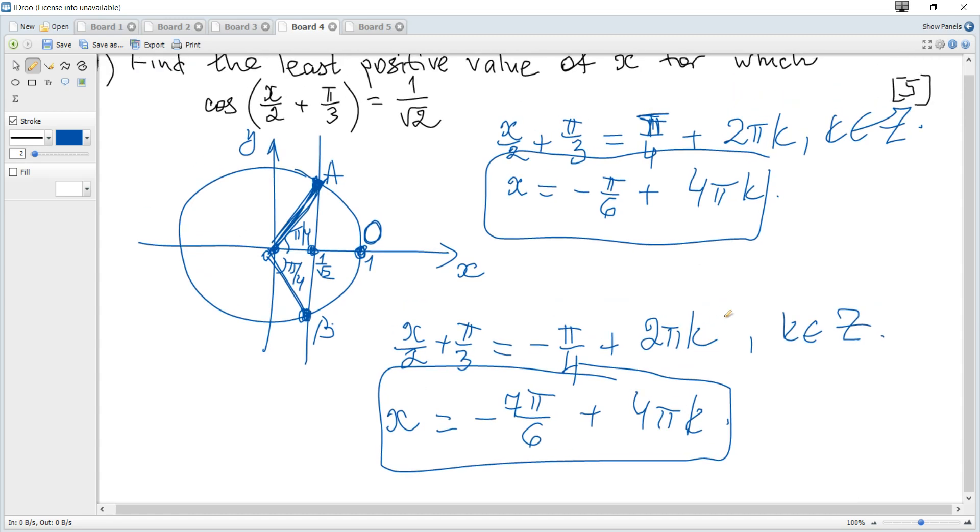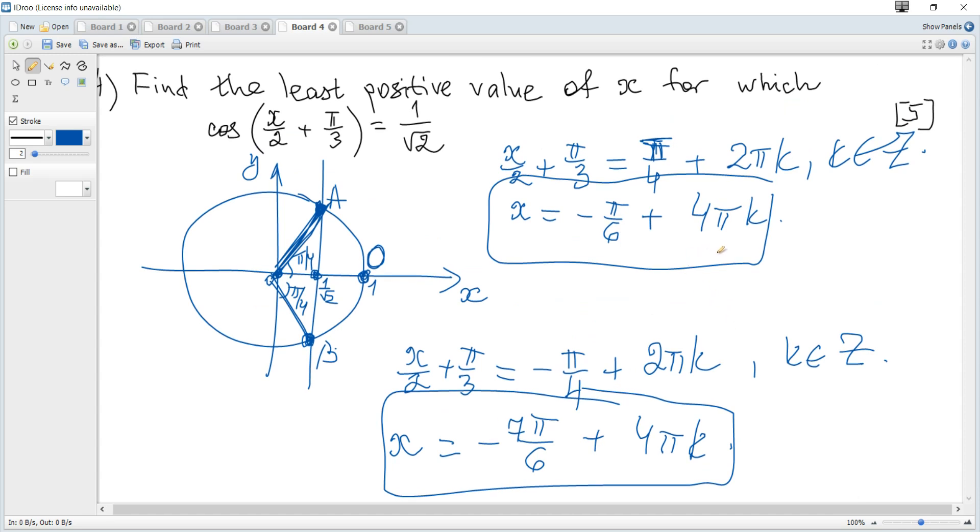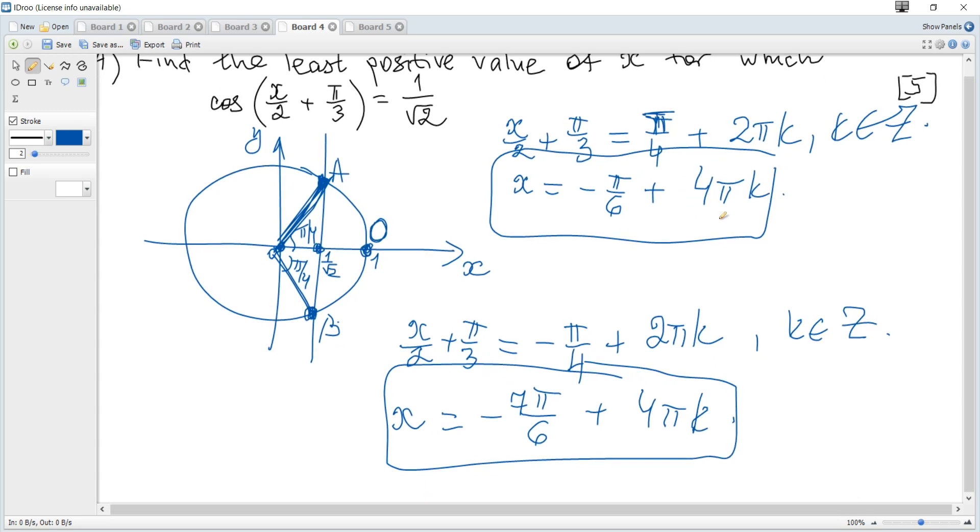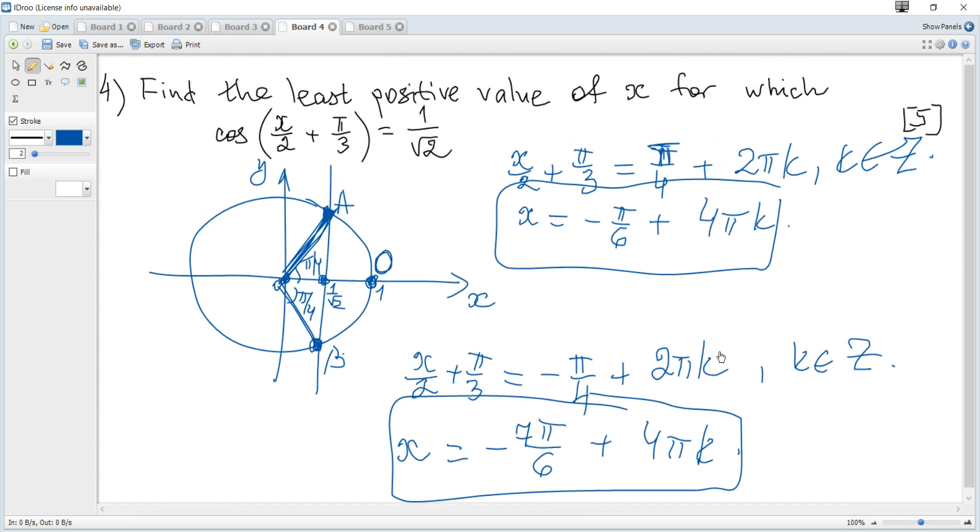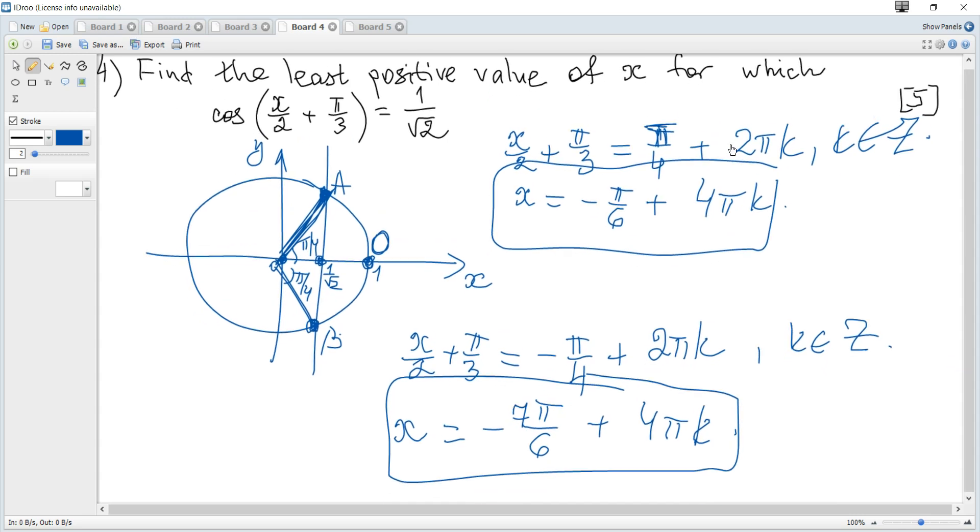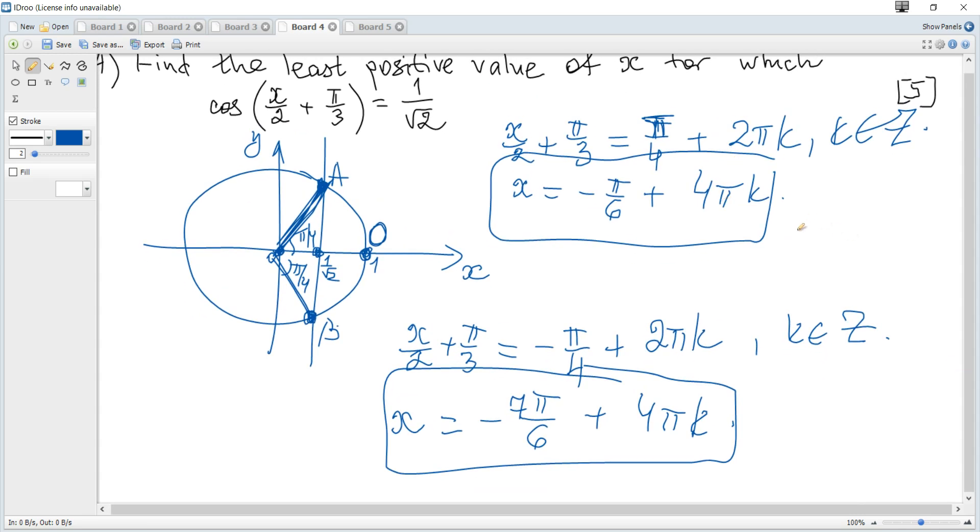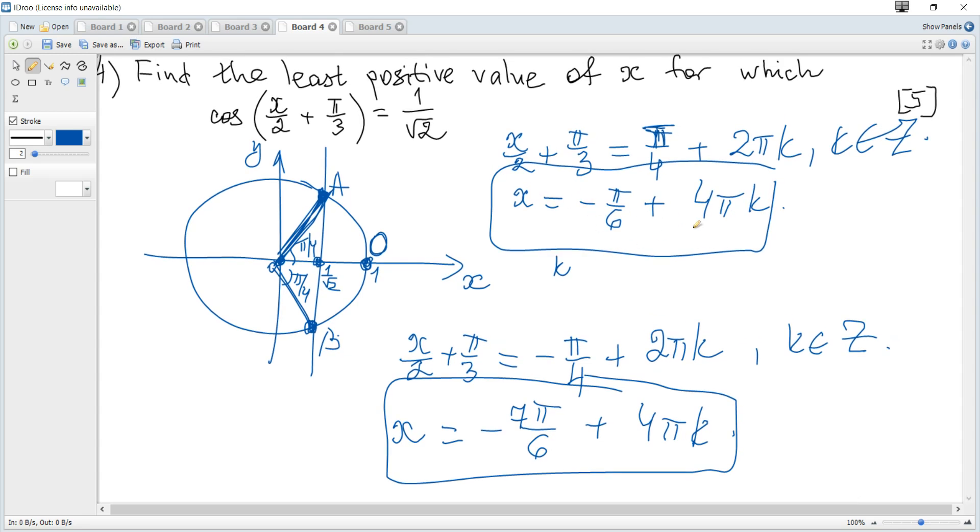For some problems a given interval may be specified. But here we need the least possible value. To find specific solutions, we consider specific values for k. For example, when k is 0, x is negative, but we need positive. So consider k equals 1.